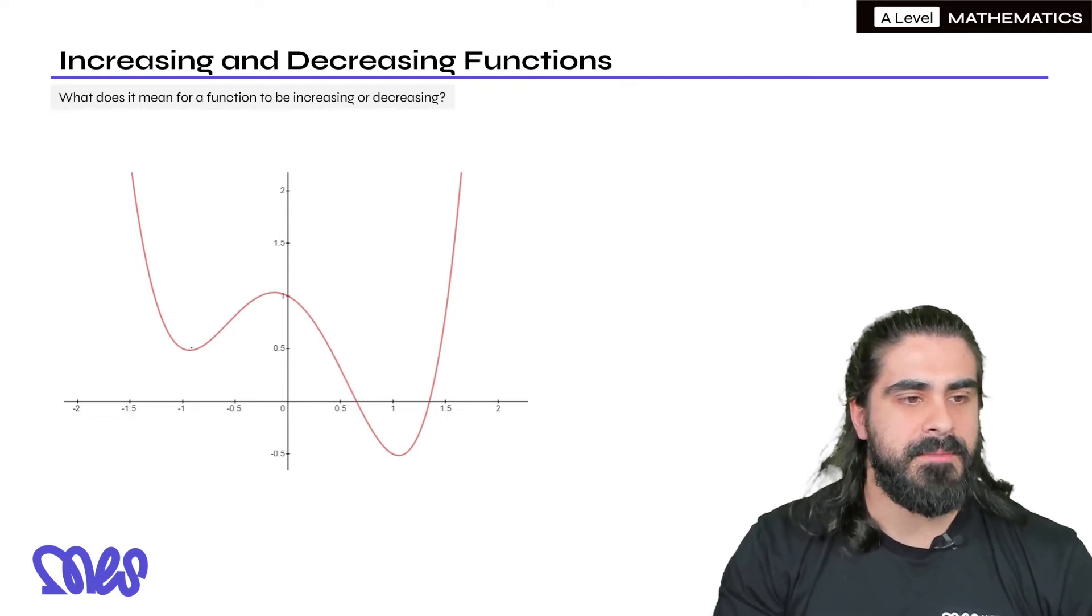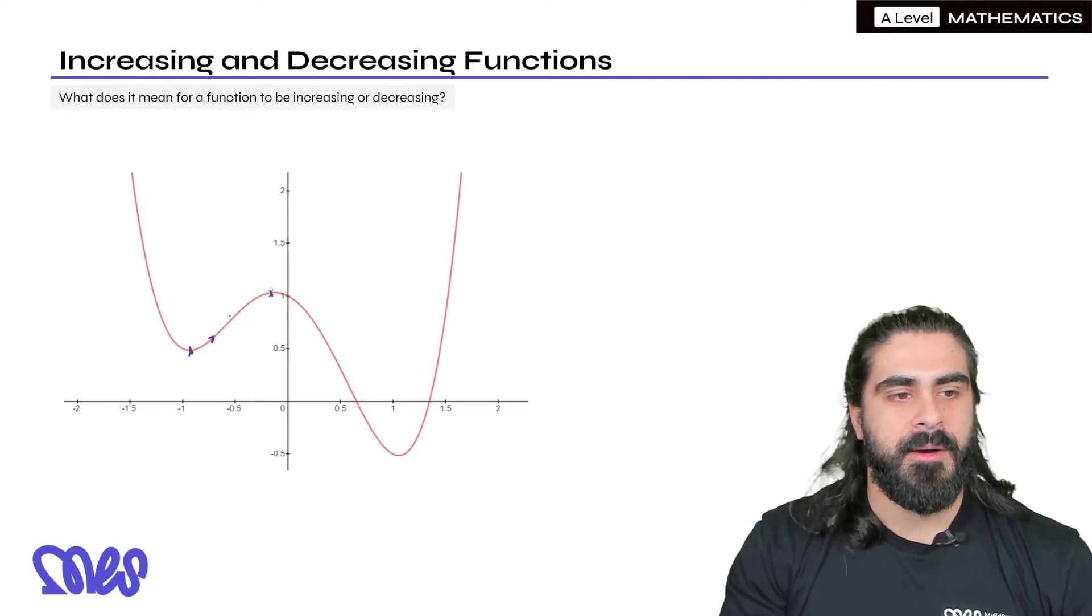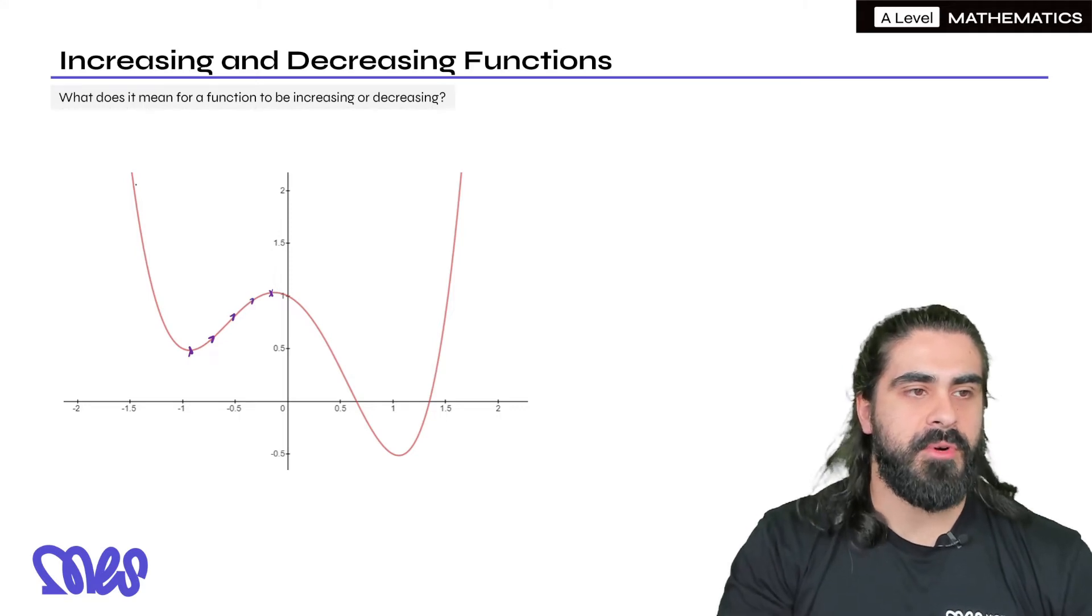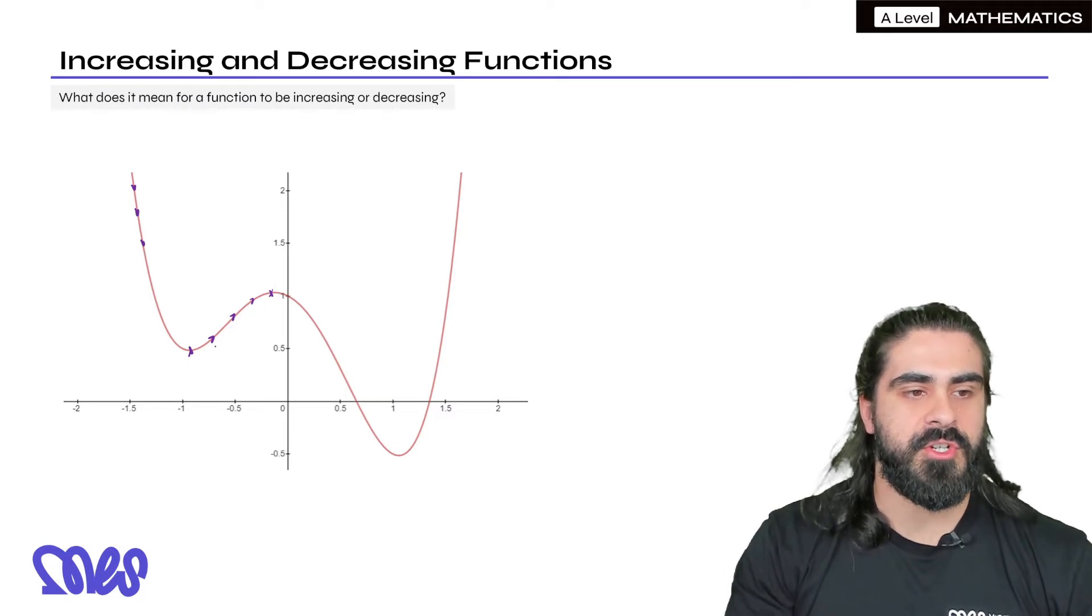Now intuitively you might say between this point and this point the graph is increasing. It's going upwards and before this point you can see it's going downwards. Now why would we define this as being a decreasing function while we define this section as being an increasing function?